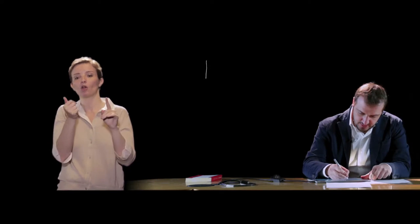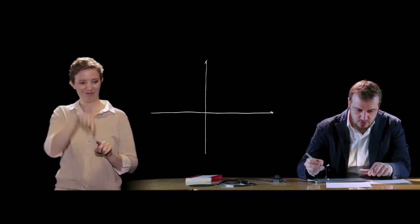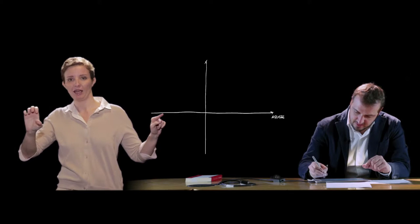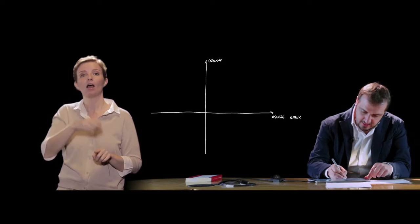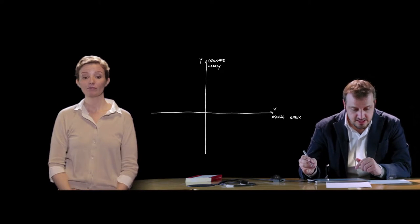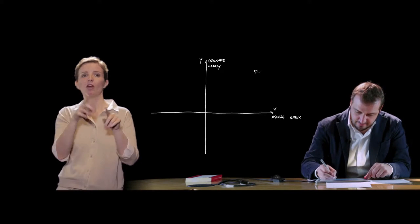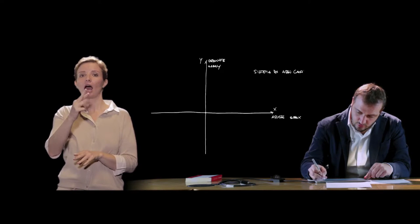Il piano può essere descritto mediante una coppia di numeri reali. È possibile considerare due rette orientate, una verticale e una orizzontale. La retta orizzontale prende il nome di asse delle ascisse, detta anche asse delle x. Quella verticale prende il nome di asse delle ordinate, o asse delle y. Il loro punto di intersezione identifica l'origine del sistema di riferimento, che è un sistema di assi cartesiani ortogonali tra di loro.